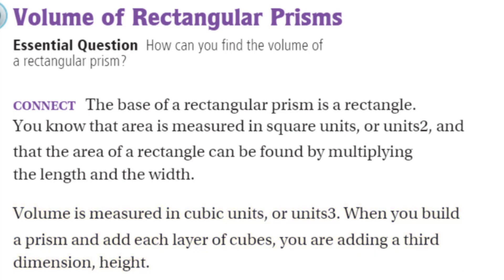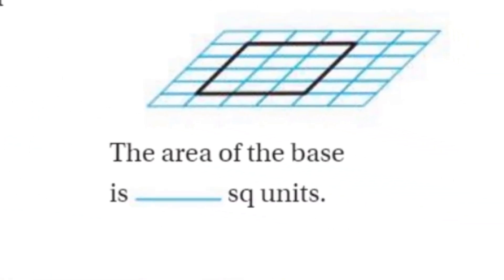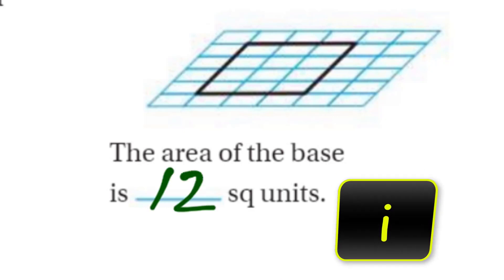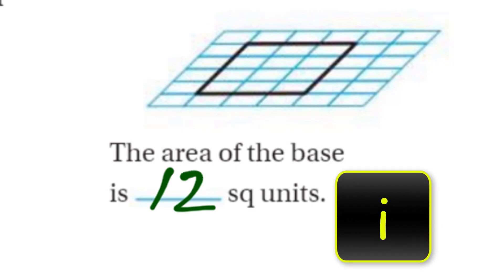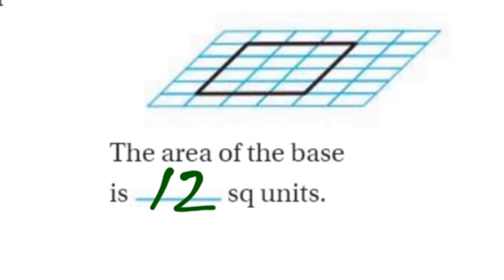Very cool. You may recall that we did area back in the day — probably like fourth grade. The area of the base here — if the area is just length times width, it's just a two-dimensional figure. We have three for the width, and the length looks like 1, 2, 3, 4. So we have an area of this particular base of 3 times 4, or 12 square units. Area has to do with two dimensions — just length and width. But volume is when you build layers on top of that base.